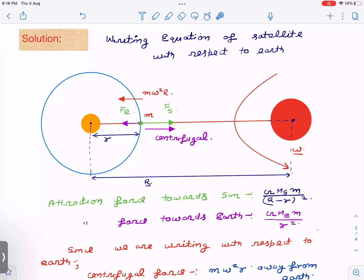Two obvious forces. One is the force due to sun attraction force, which is G Ms m / (R - r)². Ms is mass of the sun, small m is mass of the satellite. And this distance is R minus r, capital R minus small r. And towards the Earth also, G Me m / r².